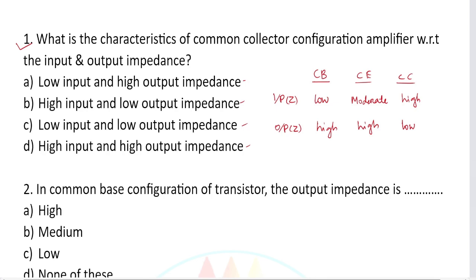So what is the characteristic of common collector configuration? The input impedance and output impedance is the key concept of the transistor configuration. For common base: input side is low impedance and output side is high impedance. For common collector: input side is high impedance and output impedance is low.